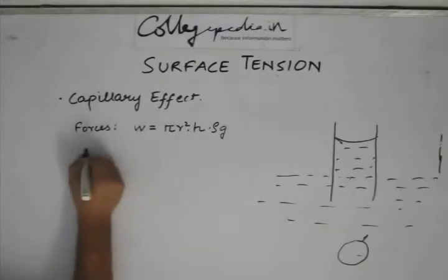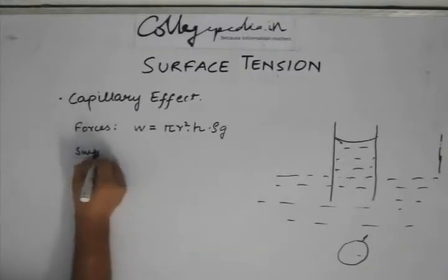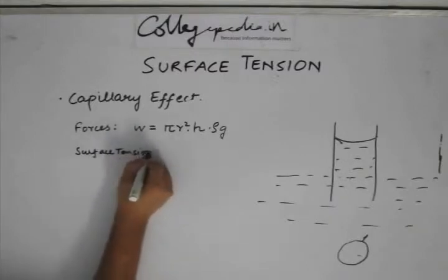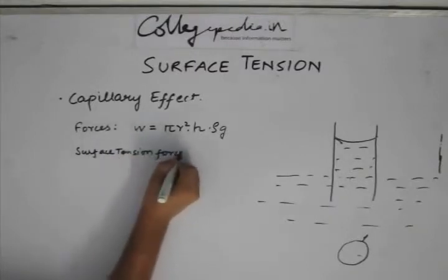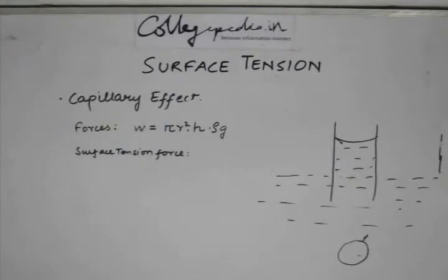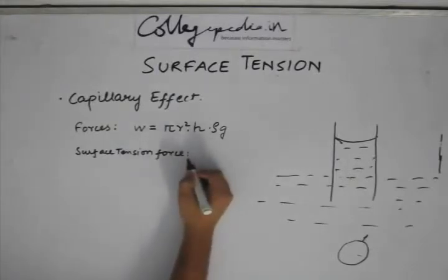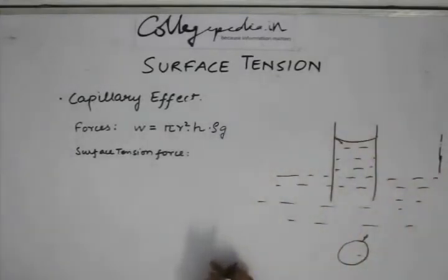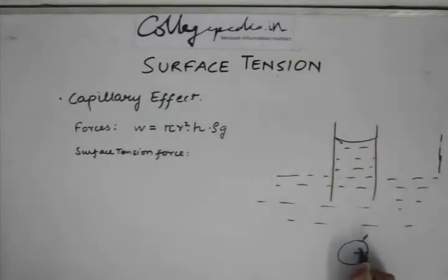The surface tension force, this comes from the fact that this entire length is nothing but, because this is small r, this is going to be 2π r, the circumference.